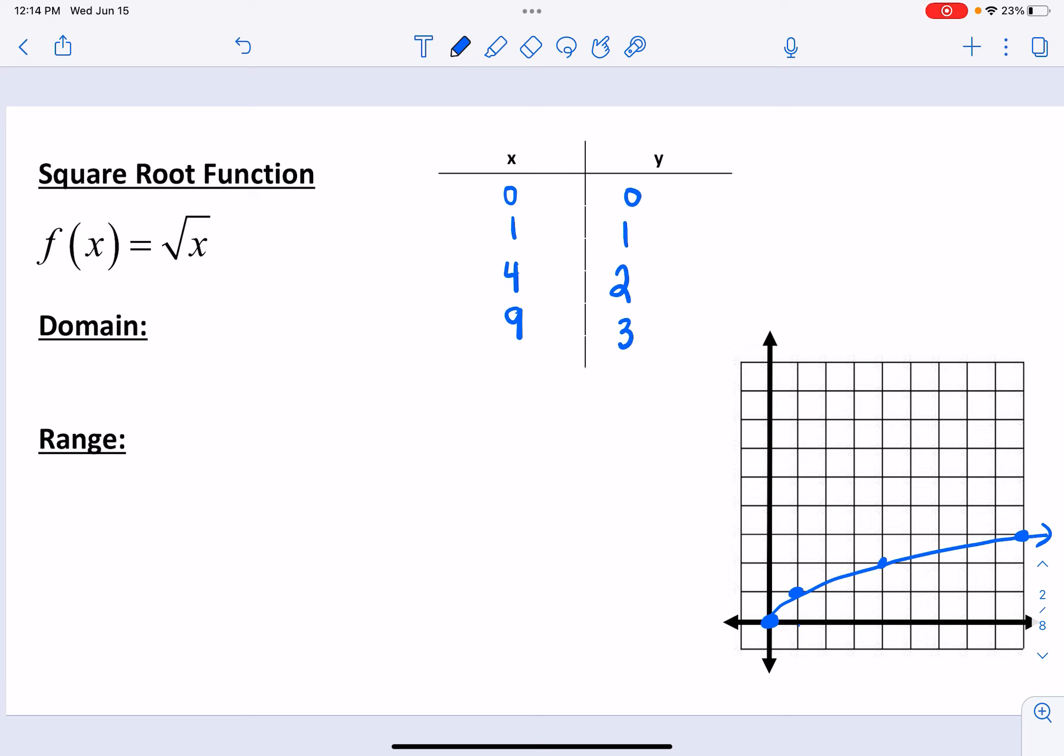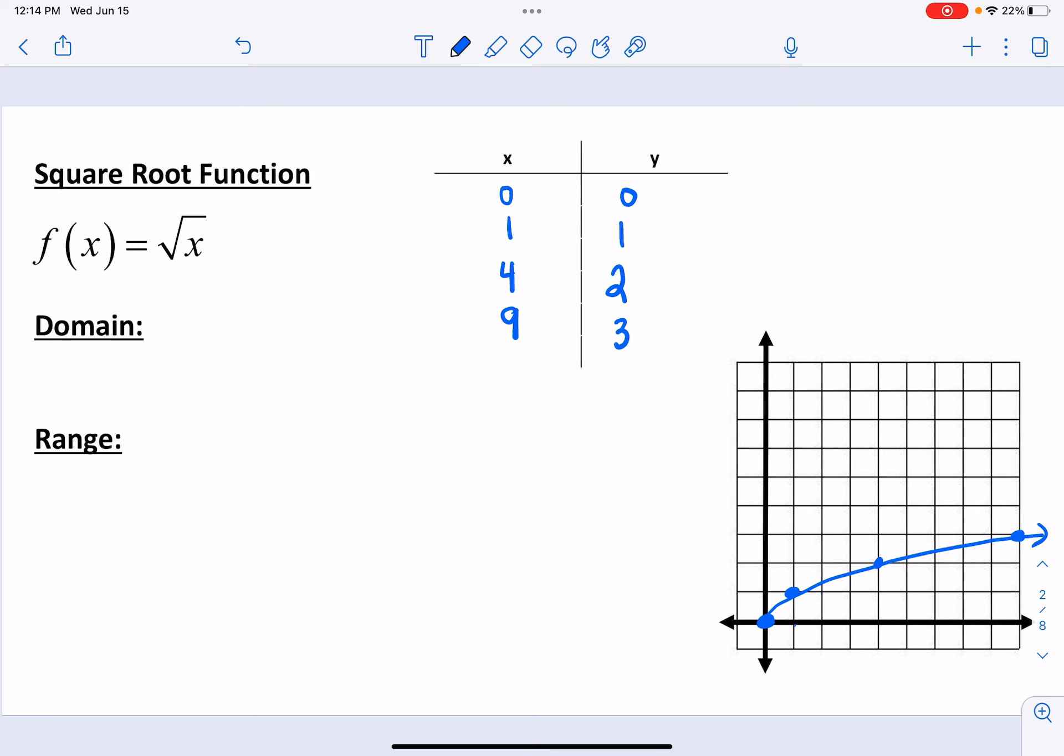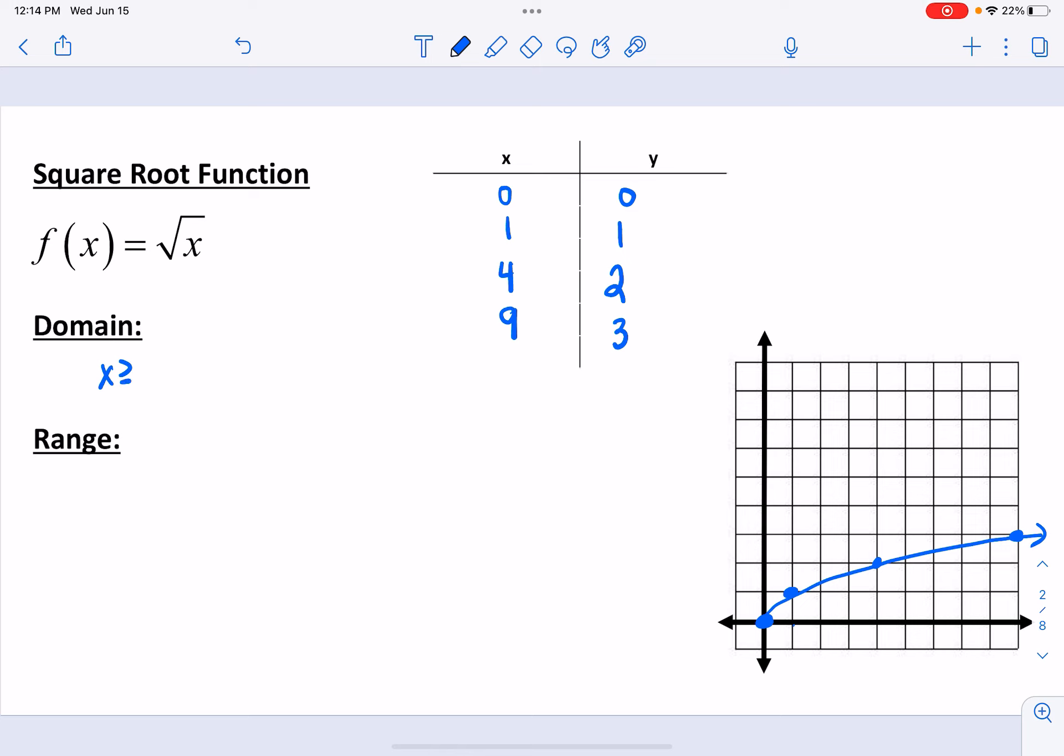So our domain. What can I take the square root of? Notice how I didn't pick any negative numbers. We can't take the square root of a negative number. So x has to be greater than or equal to 0. Our range. Notice how our graph didn't go below the x-axis. So y has to be greater than or equal to 0.